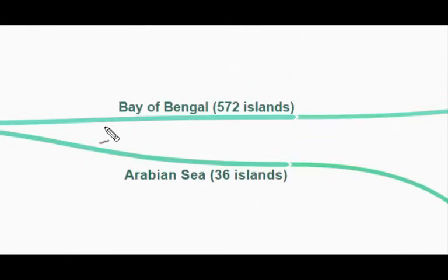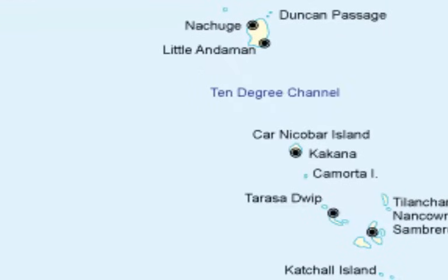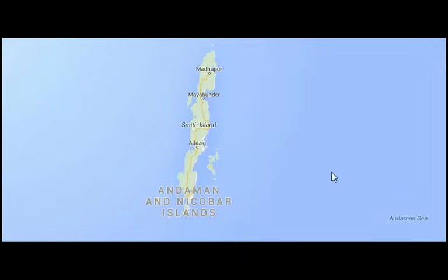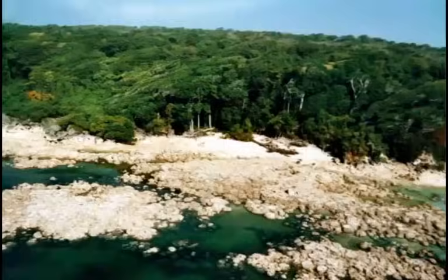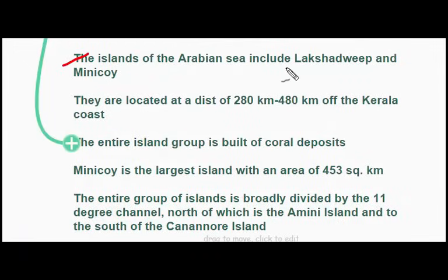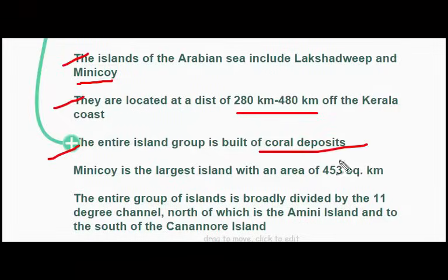Moving on to the islands: we have two island groups. At the Bay of Bengal, there are 572 islands, and in the Arabian Sea, there are 36 islands. The Bay of Bengal islands have Andaman in the north and Nicobar in the south, separated by a water body called the 10-degree channel. These islands are believed to be elevated portions of submarine mountains, though some smaller islands are volcanic in origin. Barren Island, the only active volcano in India, is situated in the Nicobar islands. The coastline has coral deposits and beautiful beaches; these islands receive convectional rainfall and have equatorial-type vegetation. The Arabian Sea islands include Lakshadweep and Minikoy, located 280 to 480 km off the Kerala coast, built entirely of coral deposits. Minikoy is the largest island with an area of 453 square kilometers. The entire group is broadly divided by the 11-degree channel — north of which is Amini island and to the south is Kananur island.